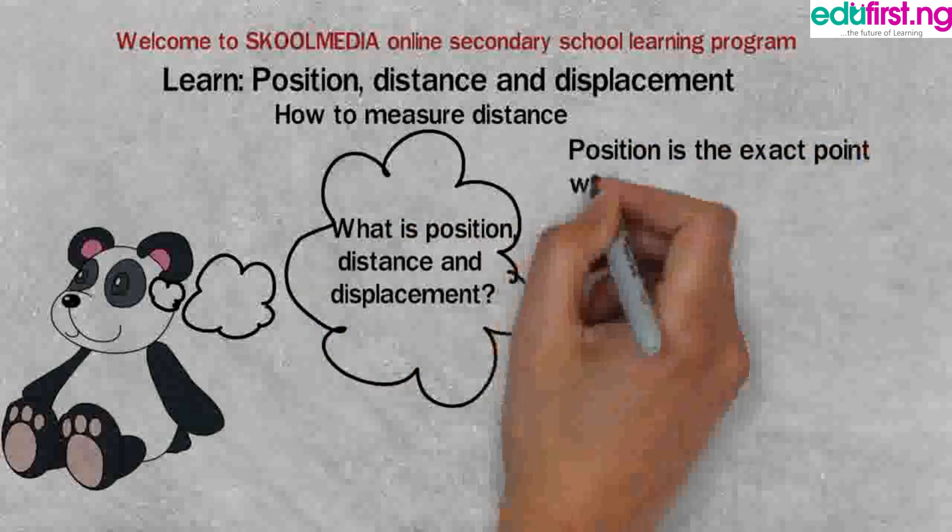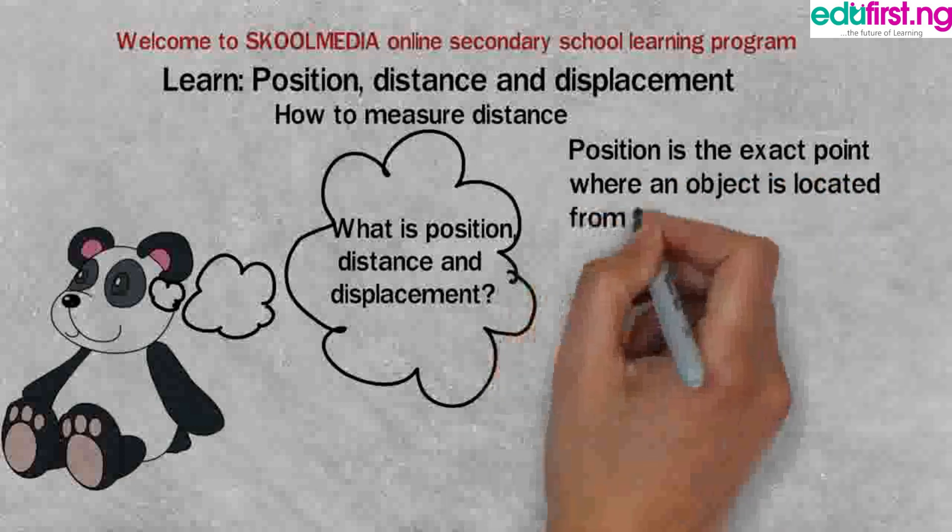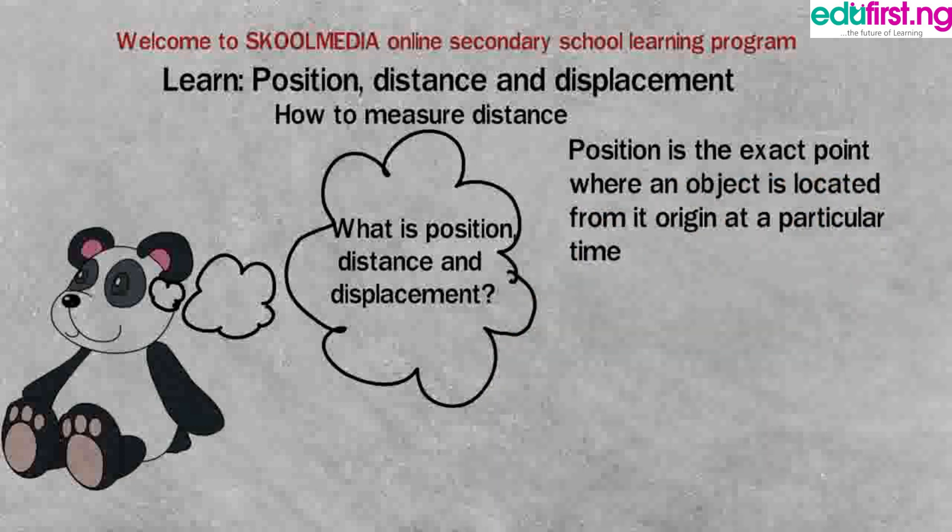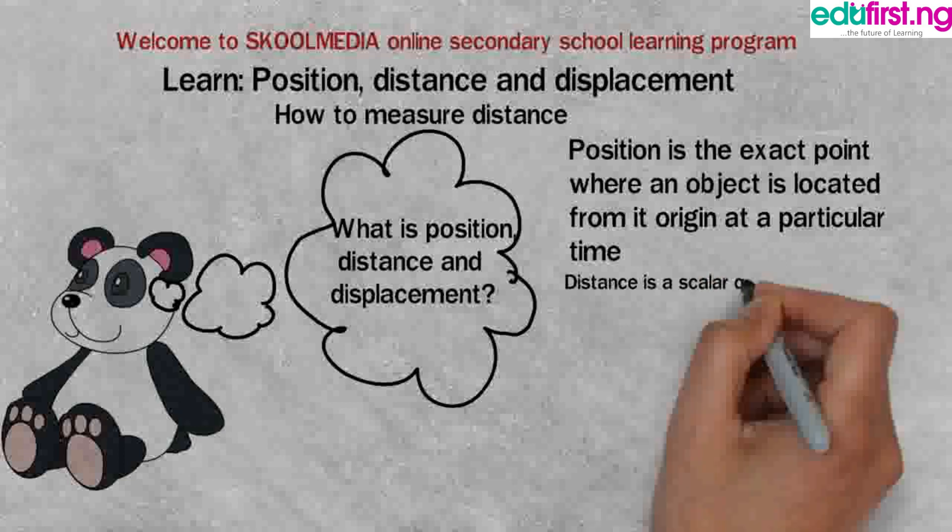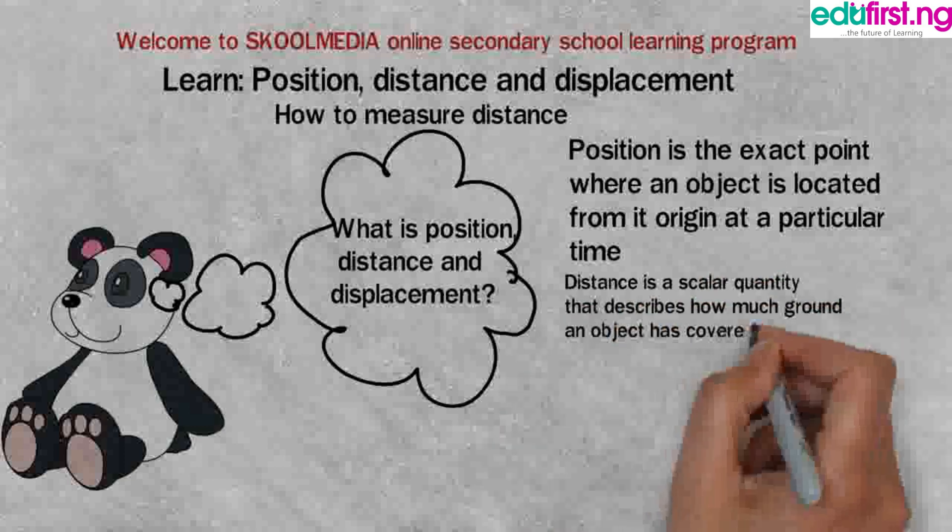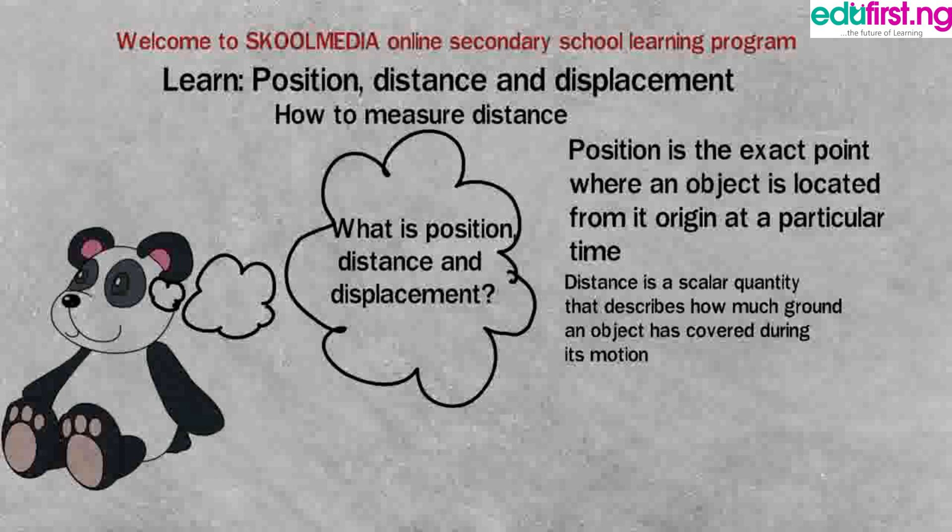Position is the exact point where an object is located from its origin at a particular time. Distance is a scalar quantity that describes how much ground an object has covered during its motion. Displacement is an object's change in position from its starting to final point.